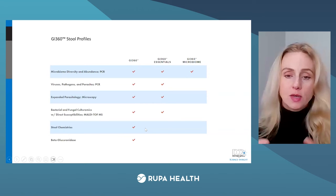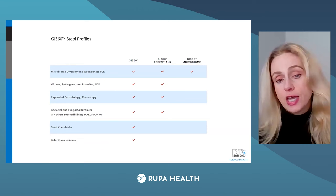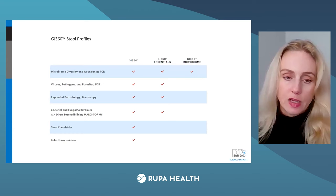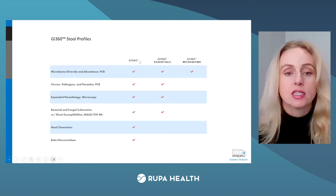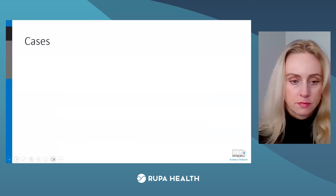GI 360 also includes the pathogen panel, which you can also find in the Essentials. Parasitology and culture are in both tests. One test we haven't looked at yet is stool chemistries and beta-glucuronidase — that's in the full GI 360, which is why I recommend starting there. You can then use smaller profiles to reorder and recheck on positive findings.